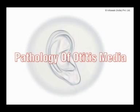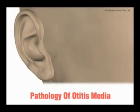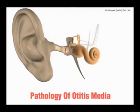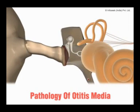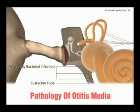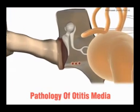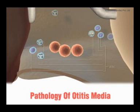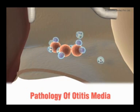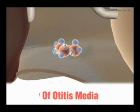Pathology of Otitis Media. When the eustachian tube is blocked due to allergy or infection in the upper part of the respiratory tract, fluid accumulates in the middle ear behind the eardrum. This causes an infection and the middle ear gets inflamed, a condition known as otitis media.